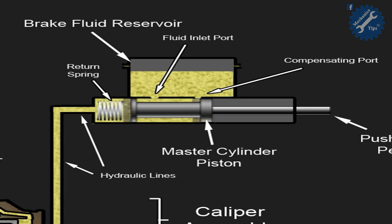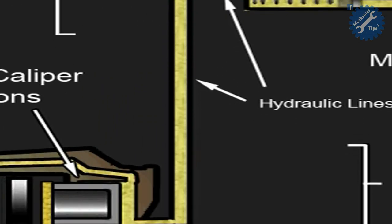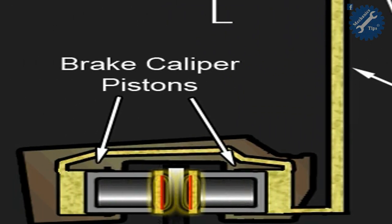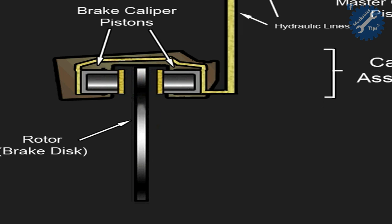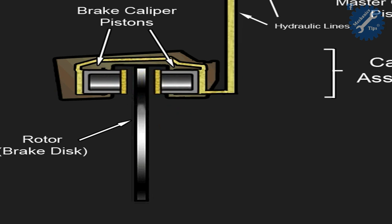The master cylinder converts the force into hydraulic pressure, which is then transmitted via connecting pipes and hoses to one or more pistons at each brake caliper. The pistons operate on friction pads to provide a clamping force on a rotating flat disc that is attached to the wheel hub.